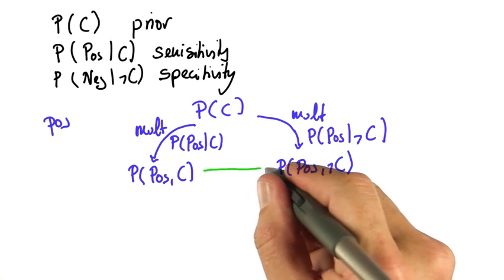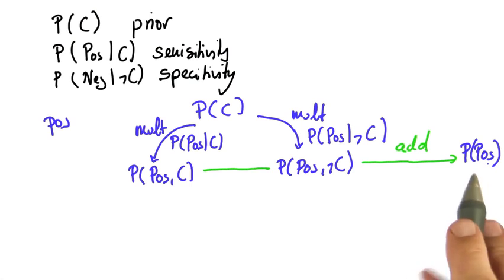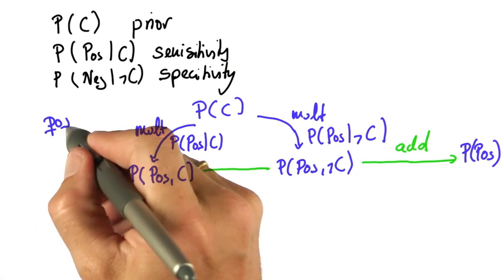Now what you do, you add those up, and they normally don't add up to one. You get a certain quantity, which happens to be the total probability that the test is what it was, in this case positive.